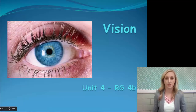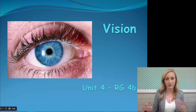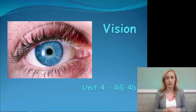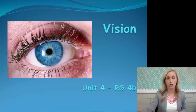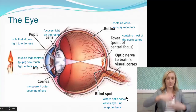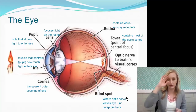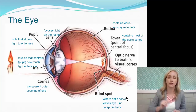We're going to talk more specifically about each of the various sensory organs, the first one being vision for our second set of notes in Unit 4. We're going to talk all about the eye and vision in general. Here is an image of the eye, and you need to be able to label a diagram of the eye as well as tell the function of every single part.